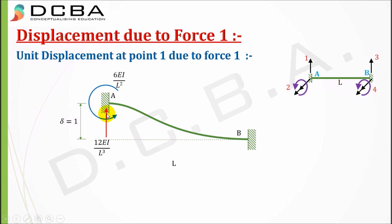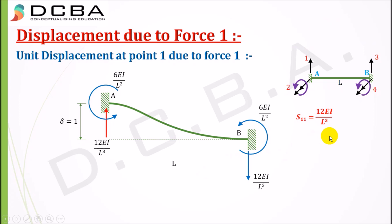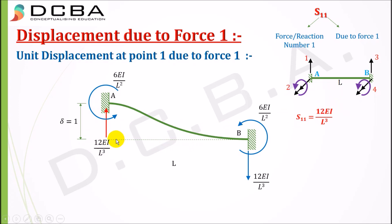The reactions formed are: an anti-clockwise moment of 6EI/L² at point one, an anti-clockwise moment of 6EI/L² at point two, and a reaction of 12EI/L³ at point two. Now, S11 — the first element of our beam element matrix — is 12EI/L³. S11 is the force or reaction at position one due to force one. Since the applied force acts upward and upward is positive, S11 equals +12EI/L³.